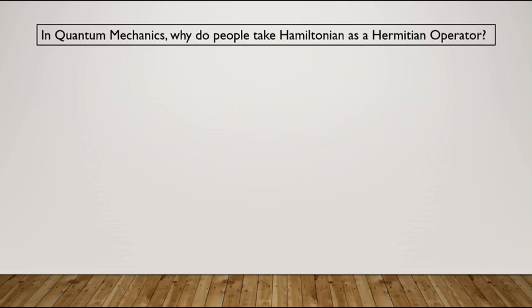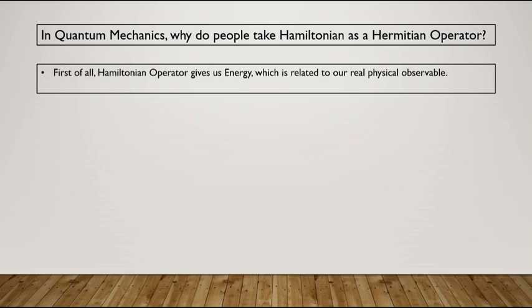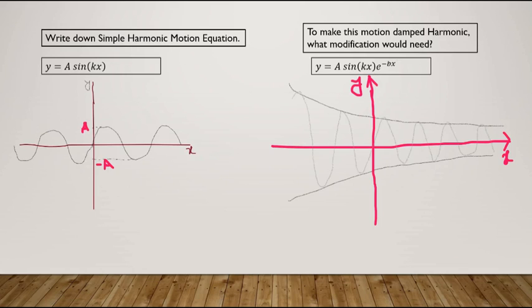In quantum mechanics, why do people take Hamiltonian as a Hermitian operator? First, the Hamiltonian operator gives us energy, which is a real physical observable. We know that Hermitian operators have real eigenvalues. Since energy is real and physical observables are real, and Hermitian operators have real eigenvalues, that's why we take Hamiltonian as a Hermitian operator.